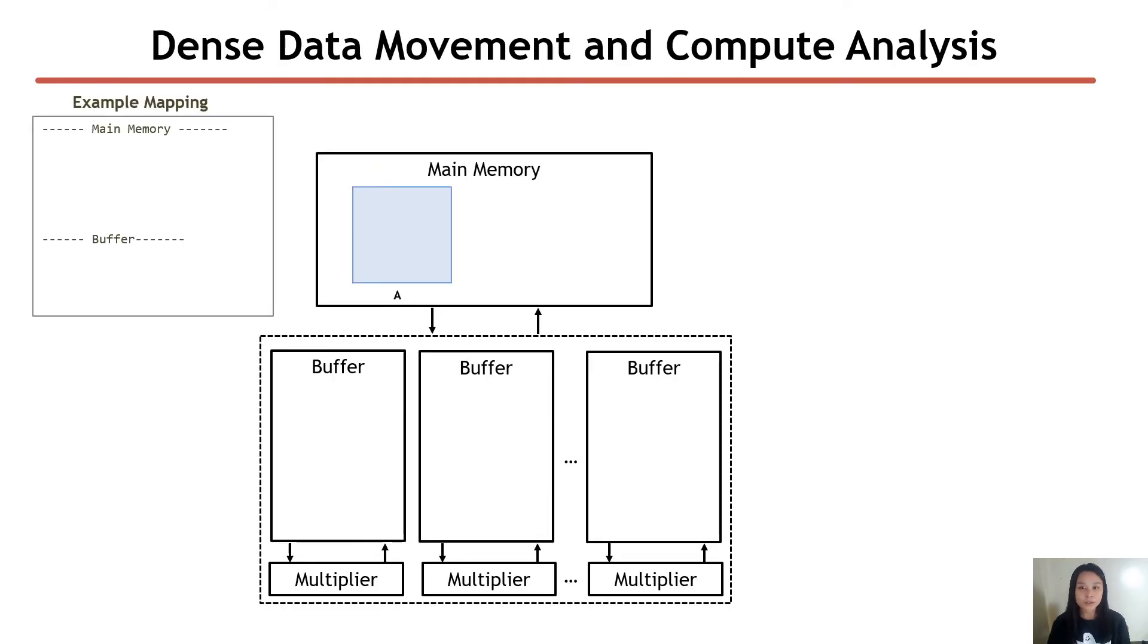Now we're ready to perform an analysis given the abstract architecture as well as an abstract workload. What we do is look at a mapping and analyze the traffic that happened on this architecture during the run of a specific workload.